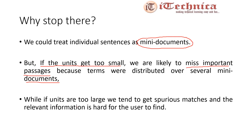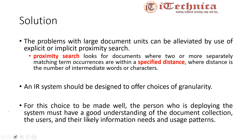So, if documents are too large, we tend to get spurious matches and relevant information is hard for the user to find. If we shorten documents into mini documents, important passages may be missed. As a solution, the problem with large document units can be alleviated by the use of explicit or implicit proximity search. Proximity search looks for documents where two or more separately matching term occurrences are within a specified distance, where that distance is the number of intermediate words or characters.